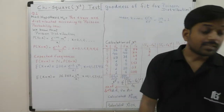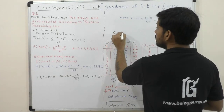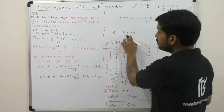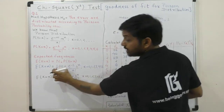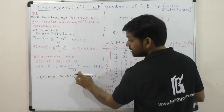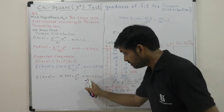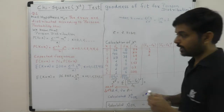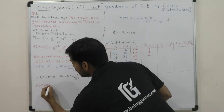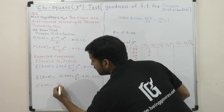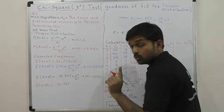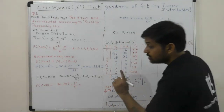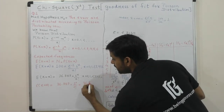The value of e is the constant 2.71828. Using the Poisson formula, when x=0: e^(-1) times 1 to the power 0 divided by 0 factorial. Since 1 to the power 0 is 1 and 0 factorial is 1, this gives us 36.787.